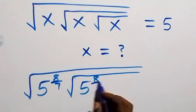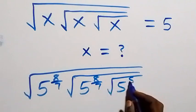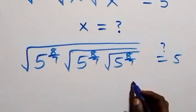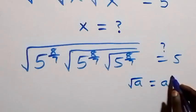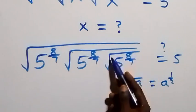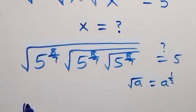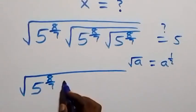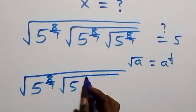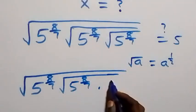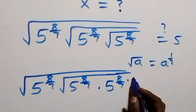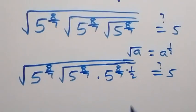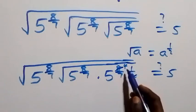This should equal 5. Let's recall: square root of a can be written as a raised to power half. Using this idea, the square root here can be changed to raised to power half. This becomes square root of 5 raised to power 8 over 7, times square root of 5 raised to power 8 over 7, then raised to power half — that is 5 raised to power 8 over 7 times half. From here, the power multiplies: 8 over 7 times one half gives 4 over 7. So we have 5 raised to power 4 over 7.